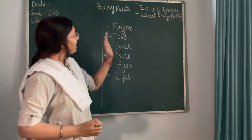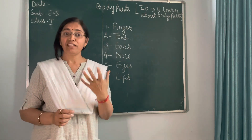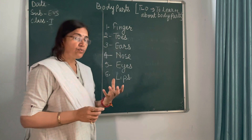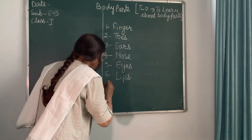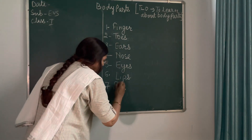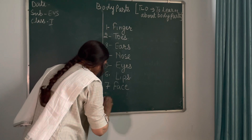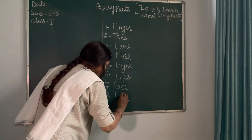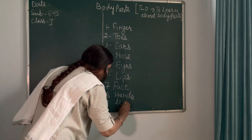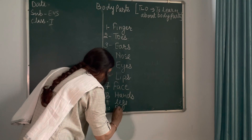So children, these are the different body parts we have learned in this poem. Along with that, we will learn more body parts. The next one is the face, then hands, ninth one is the legs, and the tenth one is the foot.